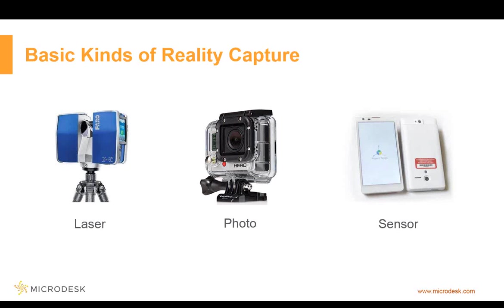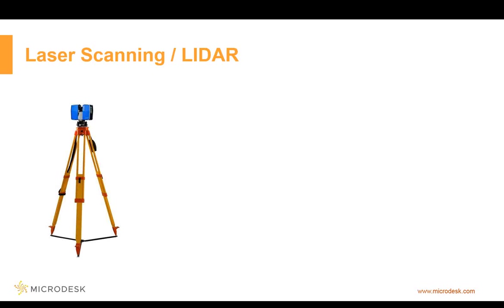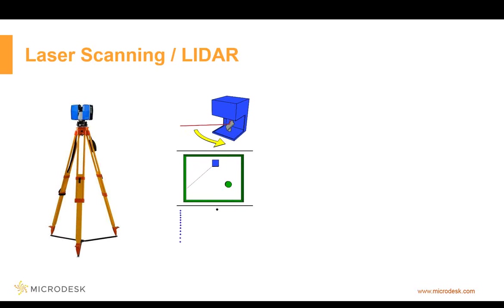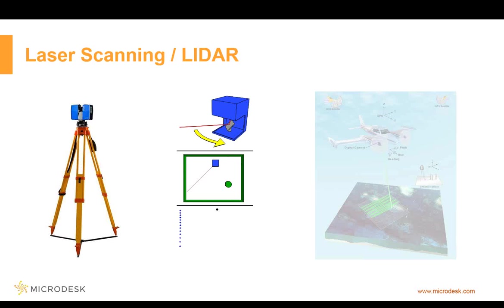Laser scanning — for the most part, everybody thinks of a scanner set up on a tripod. The new ones are really fast. What they actually do is reflect a laser off a little spinning mirror that captures hundreds of thousands of points within minutes or seconds, depending on the version. From that it creates large files — sometimes gigabytes — of points with a lot of additional information. Outside of the typical tripod-mounted unit, you can also mount these on vehicles, or even on a plane to cover large swaths of land quickly while still getting a very accurate sensor reading.